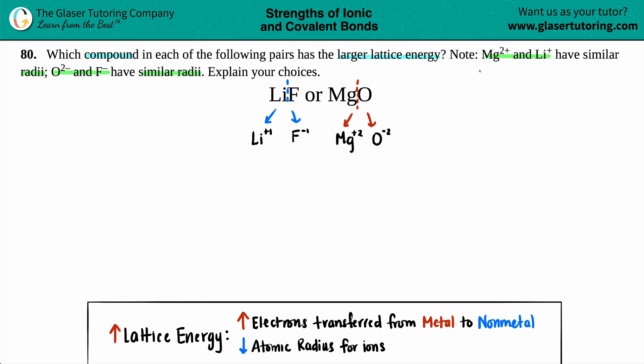Now, in this case, they did say that magnesium and lithium have similar radii. So as far as comparing which one is smaller, the radius between Li+ and Mg2+, they're the same. So they have very similar radii.